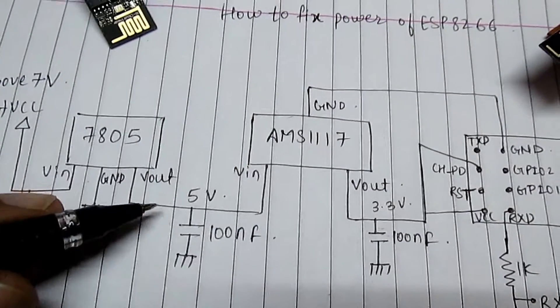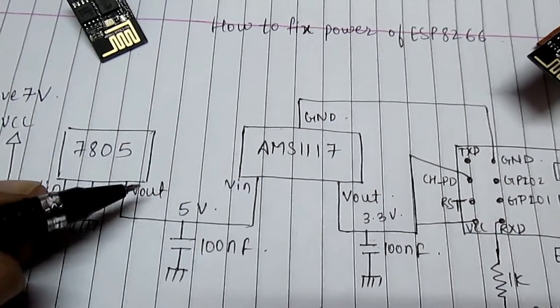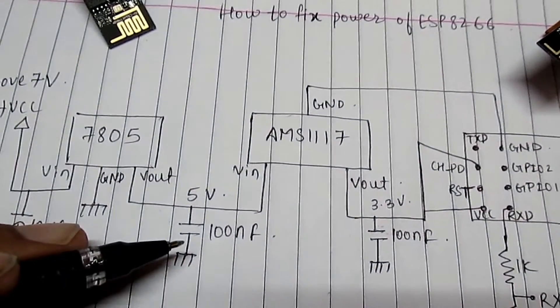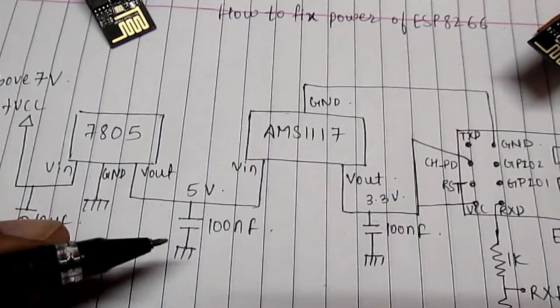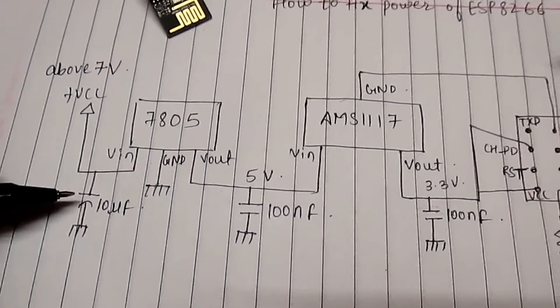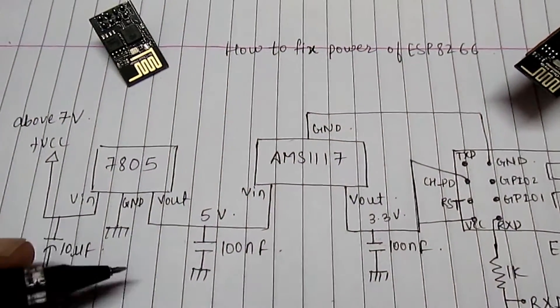I connect Vout pin of 7805 to the Vin pin of AMS117, and this capacitor is again helpful if the load increases. This capacitor is for filtration purposes. Be sure to connect all the grounds.